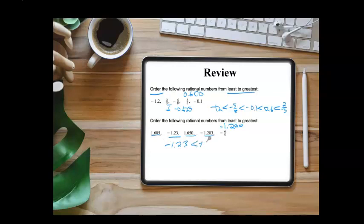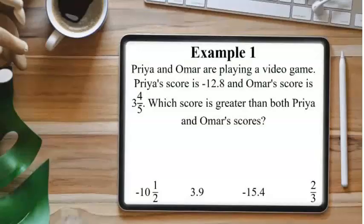The next largest is going to be the negative 1.203, and then the next is going to be negative six fifths, which is really just negative 1.2. And then for the two numbers that are positive, we can see that 1.605 is going to be smaller than 1.650, because this is six hundred and five thousandths, but this is six hundred and fifty thousandths. So we would have 1.605, which is less than 1.650.